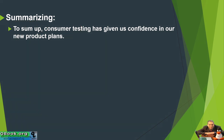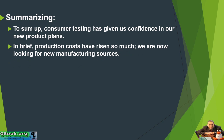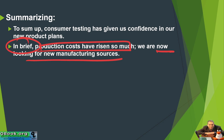To sum up — in brief — production costs have risen so much, we are now looking for new manufacturing sources. So again, we have 'in brief,' which means quickly, shortly — let me just tell you quickly. Those production costs have risen, and now we're going to look at something new. So right here is topic A, and we're about to move over to topic B.